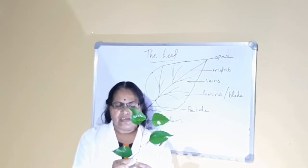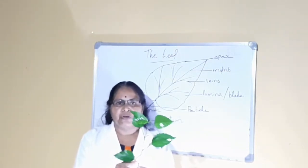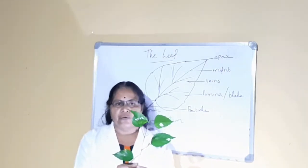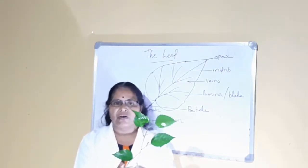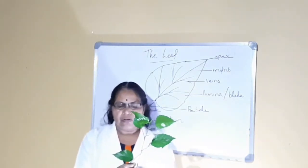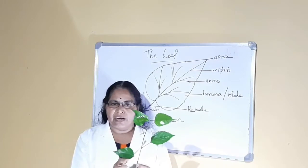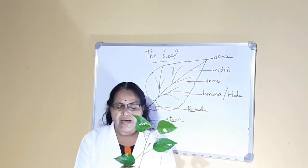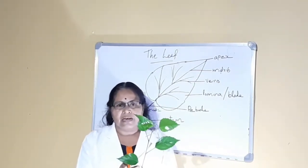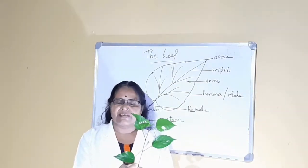For some plants, there will be no petiole — the leaves are directly attached on the node. Such leaves are called sessile leaves. So leaves may have a petiole; such leaves are called petiolate leaves. And sometimes the leaves are attached on the stem without a petiole — such leaves are called sessile leaves.